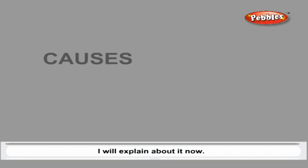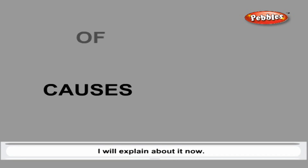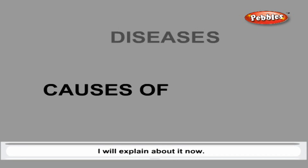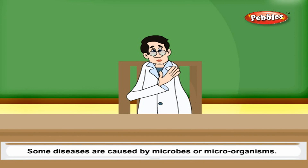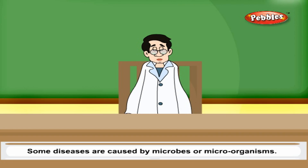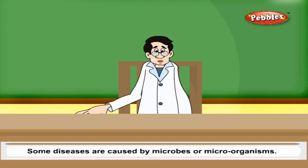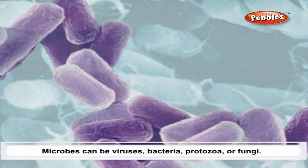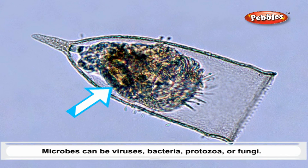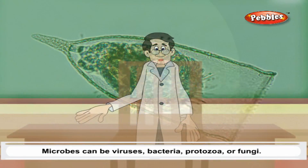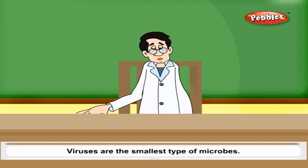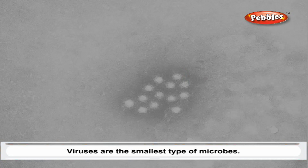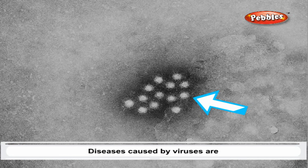Some diseases are caused by microbes or microorganisms. Microbes can be viruses, bacteria, protozoa, or fungi. Viruses are the smallest type of microbes. Diseases caused by viruses are polio, chickenpox, smallpox, German measles, rabies, and hepatitis.